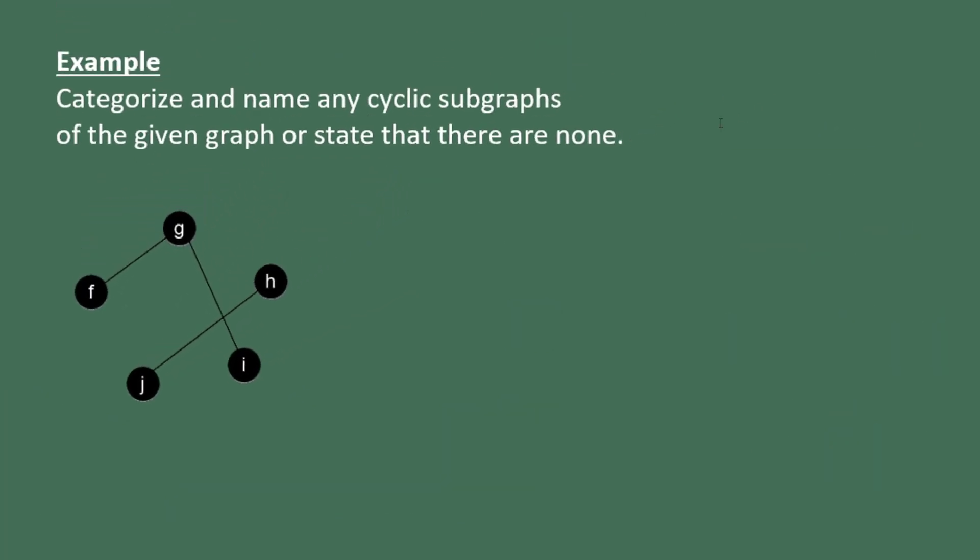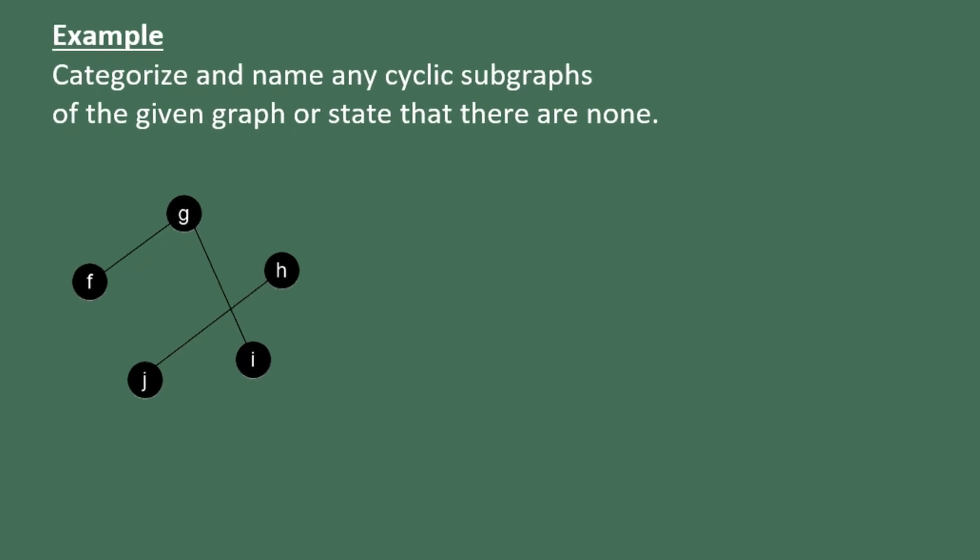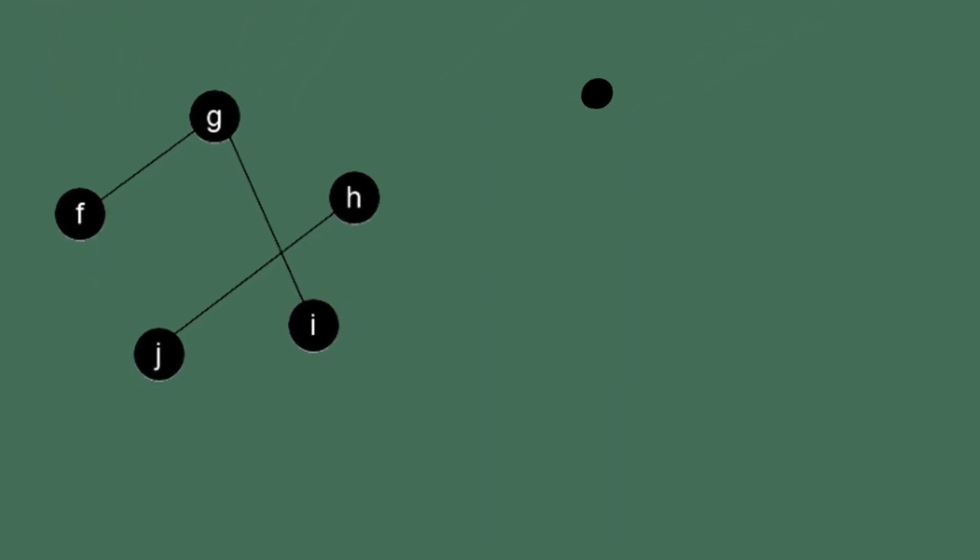Here's another example. Categorize and name any cyclic subgraphs of the given graph or state that there are none. So this particular graph has no cycles. Just to make it clear, I'm going to separate the two components that this graph has. This has the vertices f, i, and g which are connected and then it also has the vertices h and j which are connected to each other. But there's no connection between these two pieces of the graph.